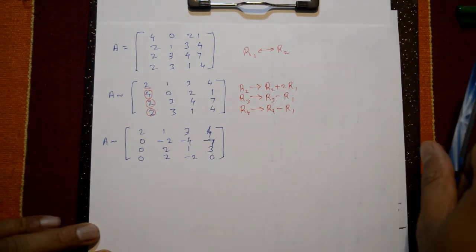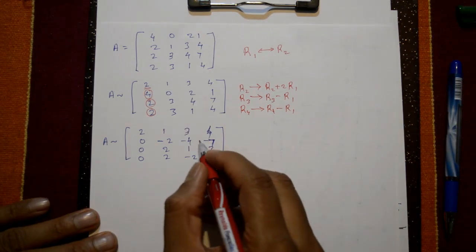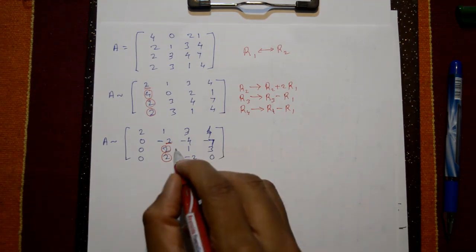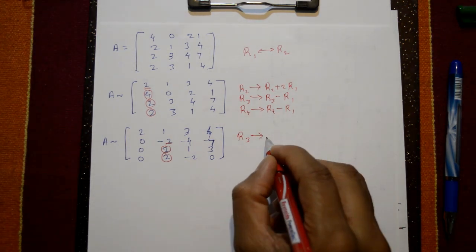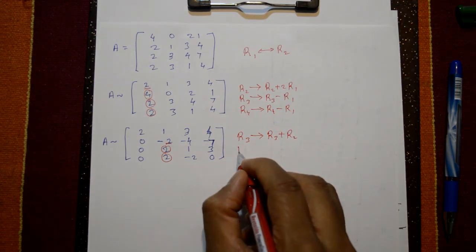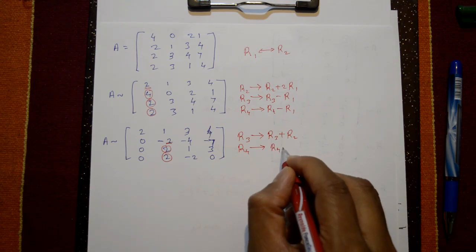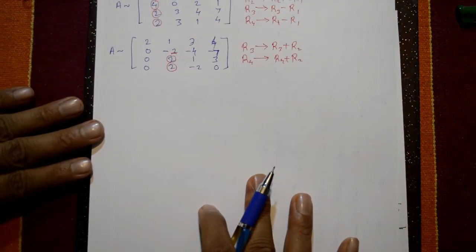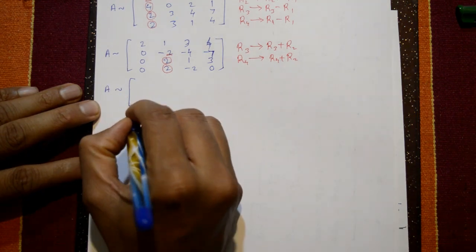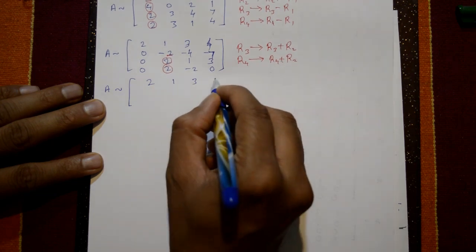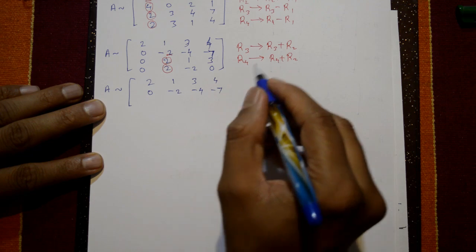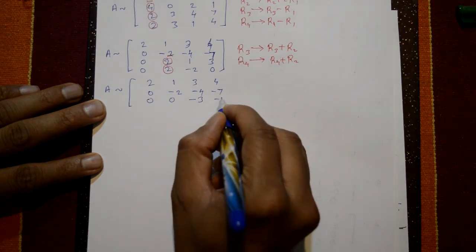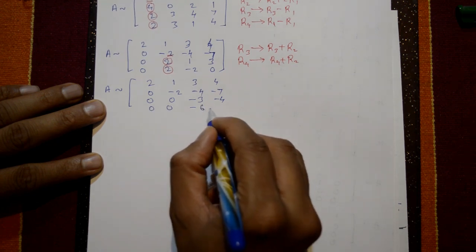The leading number in column 2 is -2. We zero out below it using R3 = R3 + R2 and R4 = R4 + R2, both using the second row. First two rows stay unchanged: 2, 1, 3, 4 and 0, -2, -4, -7. Then R3 and R4 become: 0, 0, -3, -4 and 0, 0, -6, -7.